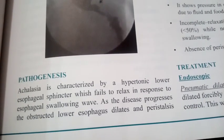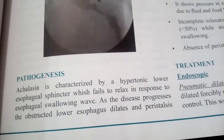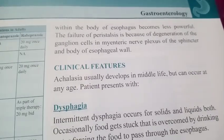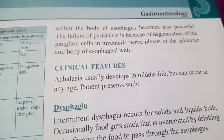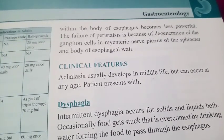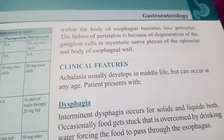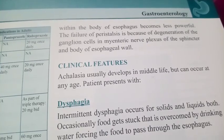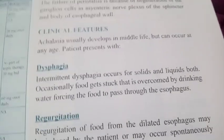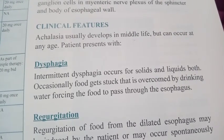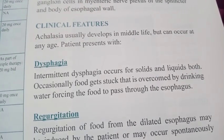As the disease progresses, the obstructed lower esophagus dilates and peristalsis within the body of the esophagus becomes less powerful. The failure of peristalsis is due to the degeneration of the ganglion cells in the myenteric nerve plexus of the sphincter and the body of the esophagus. Clinical features: achalasia usually develops in middle life but can occur at any age.